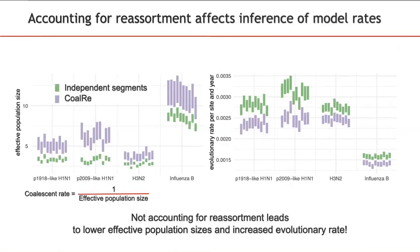Lastly, the posterior distribution of rates obtained by CoalRe versus assuming independent segments were significantly different. Assuming independent segments, and therefore not accounting for reassortment, leads to lower effective population size, seen here, and thus increased coalescent rates, which are inversely proportional. In addition, not accounting for reassortment also leads to higher evolutionary rates.